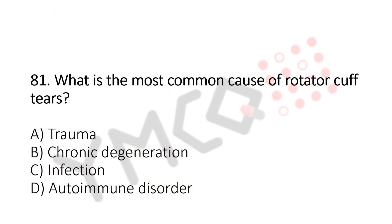Which is the common cause of rotator cuff tear? Option A: trauma. Option B: chronic degeneration. Option C: infection. Option D: autoimmune disorder. And the answer is option B, chronic degeneration.